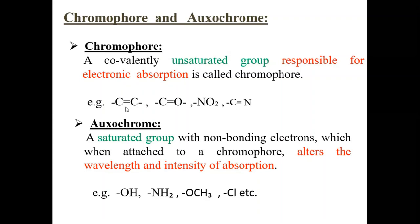Examples of chromophores include alkene, carbonyl, nitro, cyano, and so on. These types of unsaturated groups are responsible for the electronic transition in UV spectroscopy.